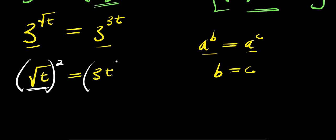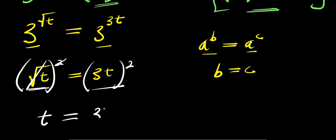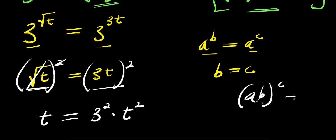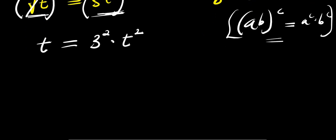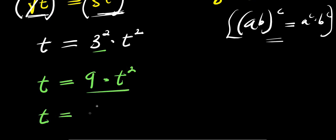Now what we are going to do is eliminate this square root — we square both parts of the equation. So the square root eliminates, and we have t equals 3 squared times t squared. Remember, if you have (a times b) raised to the power of c, this equals a power c times b power c. So we apply that identity here, giving us t equals 3 squared, which is 9, times t squared.